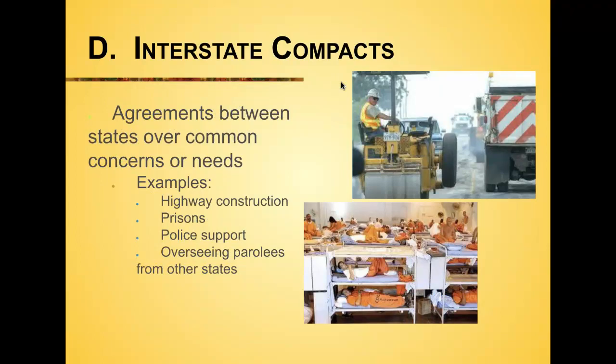Interstate compacts are agreements between states over common concerns — such as a highway or interstate crossing state lines, like between Wisconsin and Illinois. States may also ship prisoners to another state with extra jail capacity, such as Mississippi. Police support compacts allow officers from South Beloit to pursue suspects into Beloit during a hot pursuit, which Beloit appreciates. That concludes this lecture — let me know if you have questions. See you in class. Have a great day!